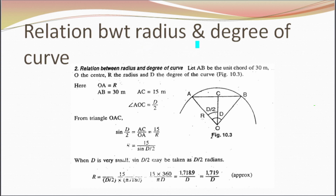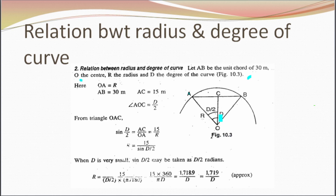Now for the relationship between the radius and the degree of curve: let the distance AB be the unit chord. The unit chord here is 30 meters, which is what is mostly used, even in question papers — it is like the standard unit. O is the center of the circle, R is the radius, and D is the degree of curve.